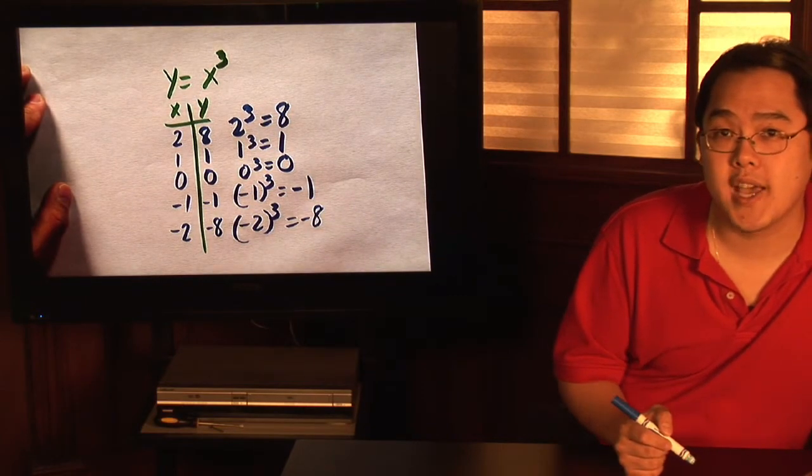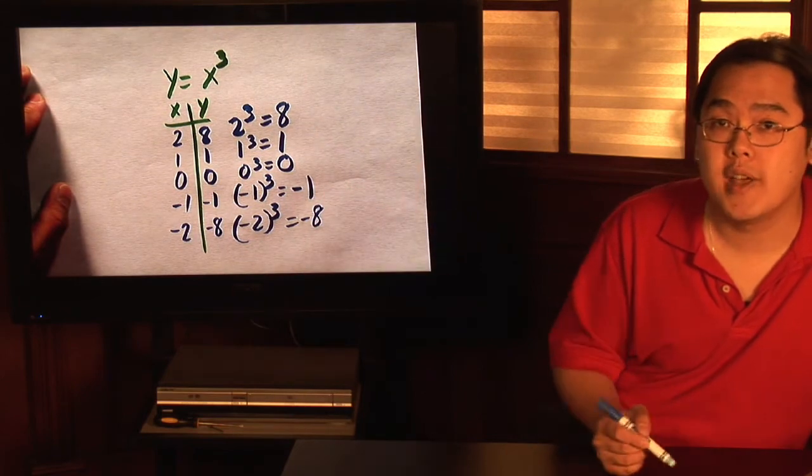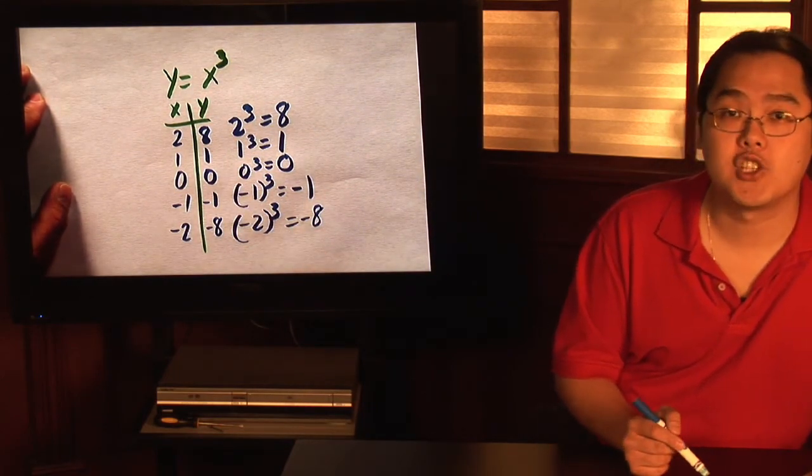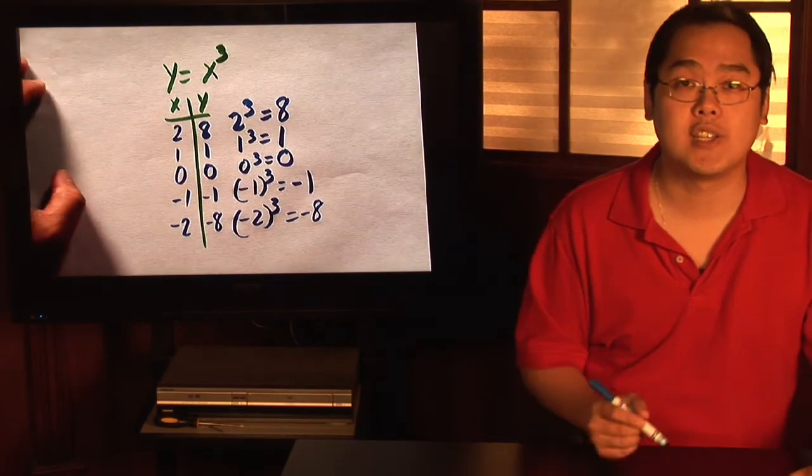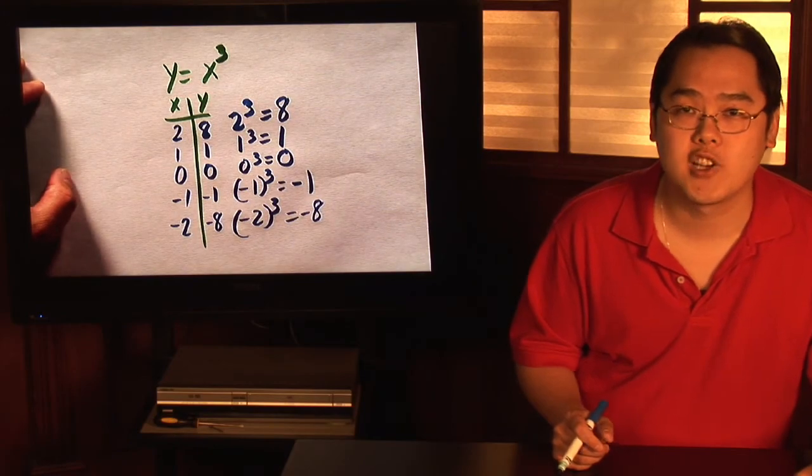And that's going to give you an idea as to what the x cubed graph is going to look like. All you have to do next is make a grid, x-y axis, plot these 5 points, and then just extend the graph. I'm Jimmy Chang, and that is how you use a table to graph functions.